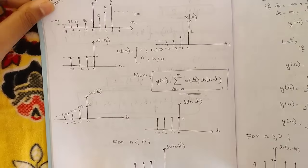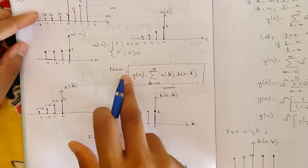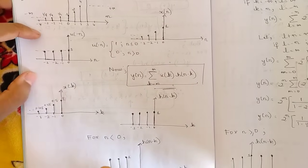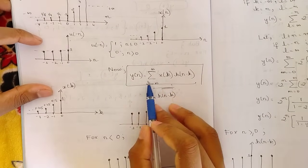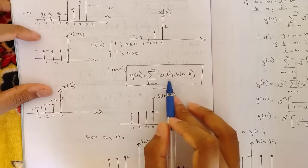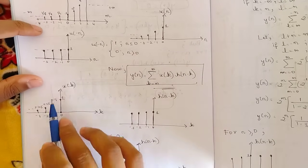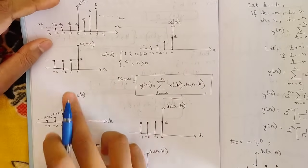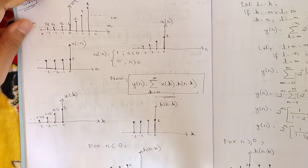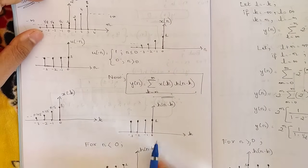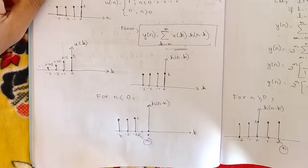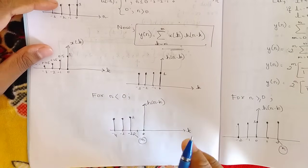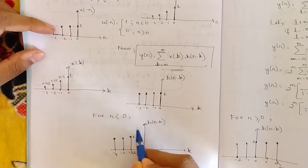Similarly, draw the plot of x(k) — just replace the variable n with k. For an LTI system, to compute y(n) we use convolution: y(n) = summation from k = −∞ to +∞ of x(k) · h(n−k). The plot of h(n−k) is equivalent to u(n−k). We consider two conditions — n < 0 and n ≥ 0 — because the overlapping regions differ for each.